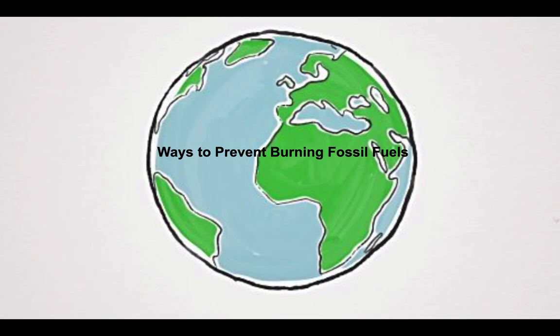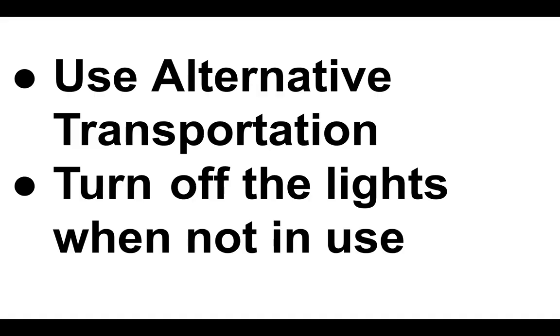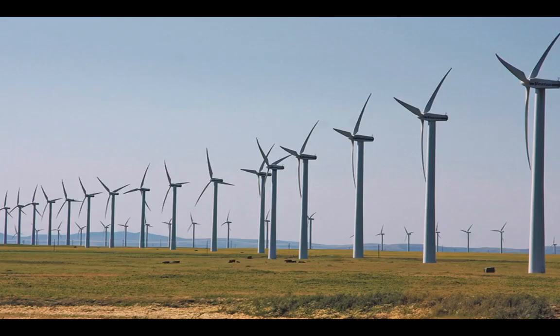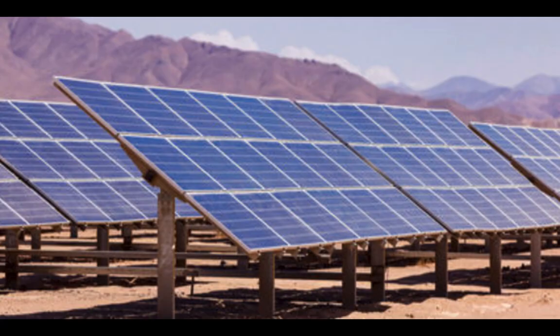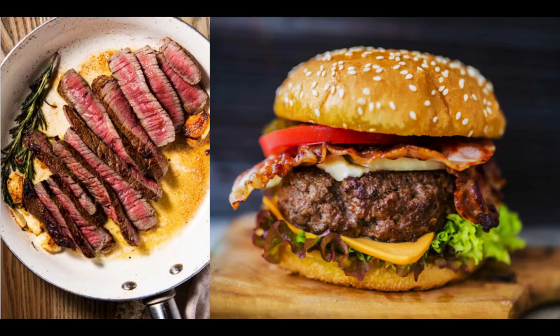Now let's look at preventing burning fossil fuels using similar methods — such as using alternative transportation or turning off the lights when not in use — but we can also use alternative power sources. Wind power uses wind to move mechanical turbines to produce electricity, or we can use solar power, which turns energy from sunlight into electricity using lenses or mirrors to focus a large amount of sunlight into a tiny beam. We can also reduce the amount of red meat we consume, so if you have the option between steak or a hamburger versus a salad, choose the salad.